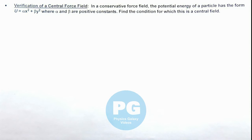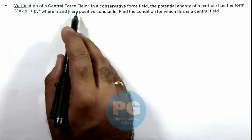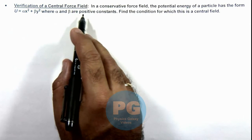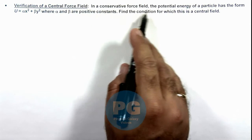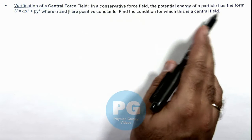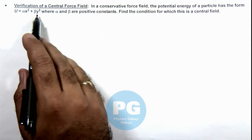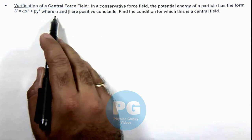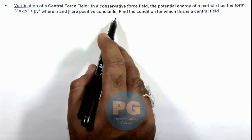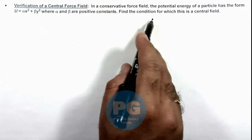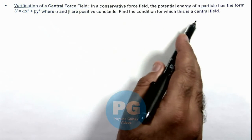In this illustration we'll study the verification of a central force field. We are given that in a conservative force field, the potential energy of a particle has the form U = αx² + βy² where α and β are positive constants. We are required to find the condition for which this is a central field.